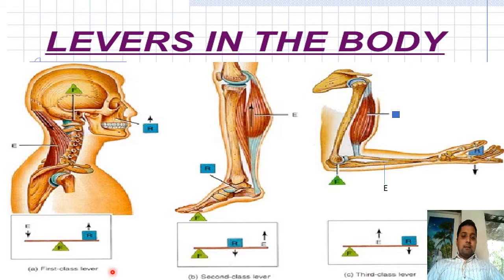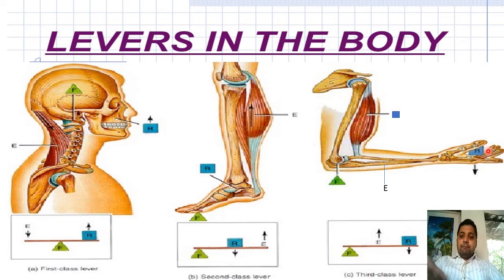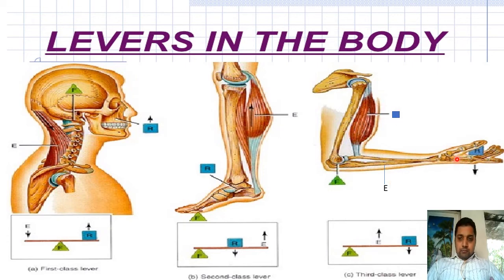Lever arrangements exist in the human body. A Class 1 lever arrangement occurs when the head balances on the spine. When we stand on our toes, the toes act as fulcrum, with the load in the middle and the effort from calf muscles — that is a Class 2 lever. When we hold a weight on our palm, effort is between fulcrum and load — that is a Class 3 lever. The formula used is: load × load arm = effort × effort arm.